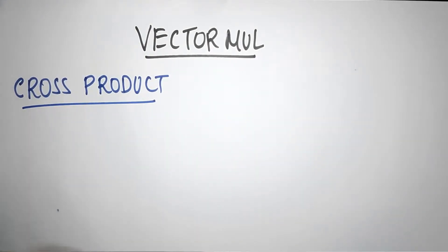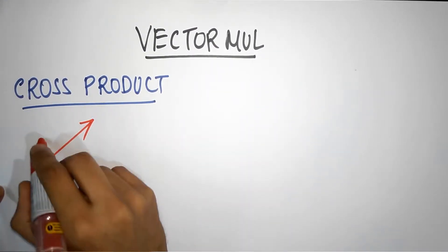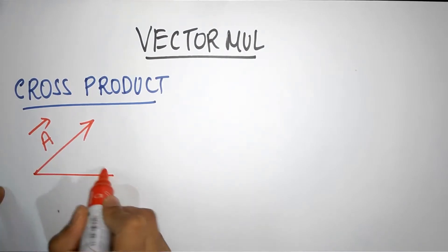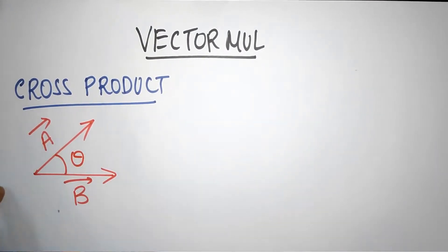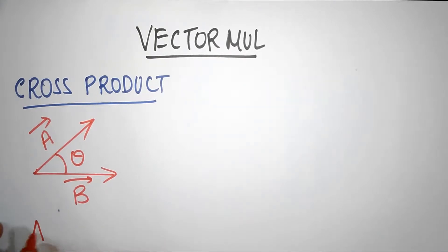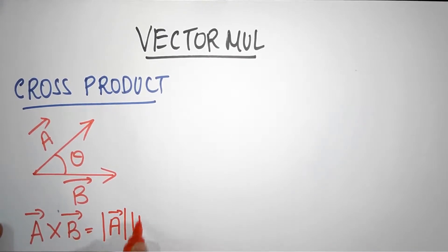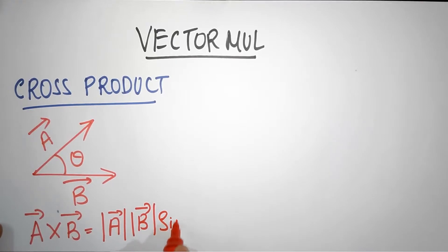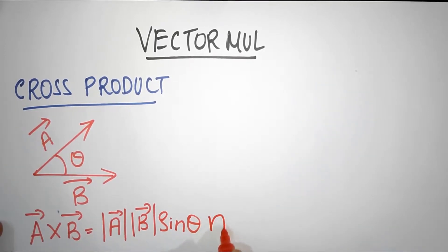What is the meaning of cross product? Imagine you have two vectors with you, say vector A and vector B. The angle between them is theta. We define cross product A cross B as the magnitude of A times the magnitude of B times sine of the angle theta between them, multiplied by n-cap.